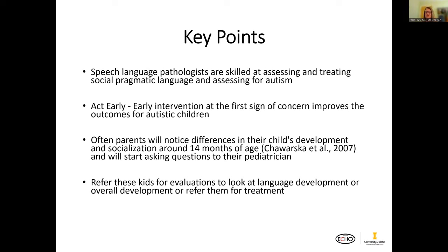We are very skilled at assessing and treating social pragmatic language and assessing for autism. We have training in this. I would ask you to act early — early intervention at the first sign of concern improves outcomes for these children. Often parents will notice differences in their child's development and socialization at 14 months of age, sometimes younger — they're going to start asking questions. Please answer those questions and refer them to get a look at these things.